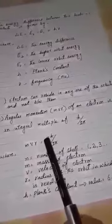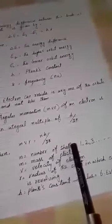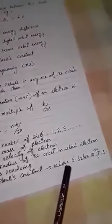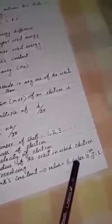And we multiply it with n. n is the number of shell: first, second, third, and whatever. m is the mass of electron, v is the velocity of electron, r is the radius of the orbit in which electron is revolving, and h is Planck's constant and its value is 6.6262 multiplied by 10 raised to power minus 34 joules per second.